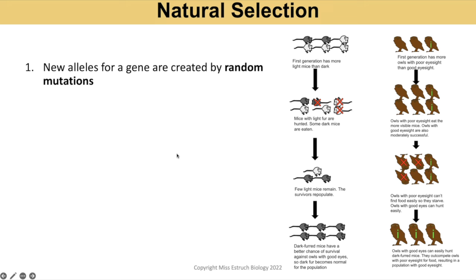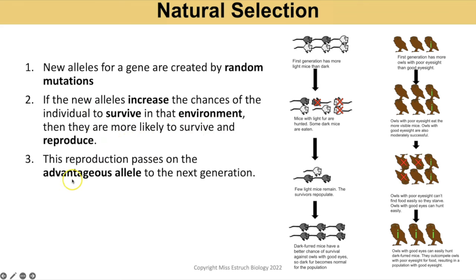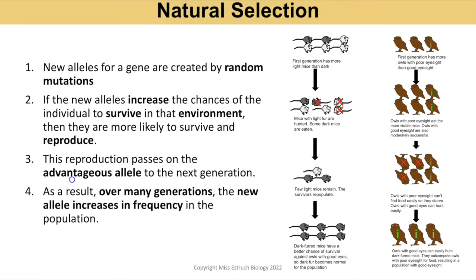The process of natural selection begins with genetic variation within the population, because new alleles are created by random mutations. If a new allele provides a selective advantage — increasing the chances of survival in that environment — those individuals are more likely to survive, reproduce, and pass on that advantageous allele. Over many generations, that mutated allele becomes more frequent in the gene pool, and this change in allele frequency over many generations is evolution.